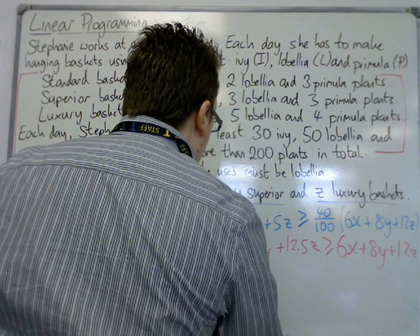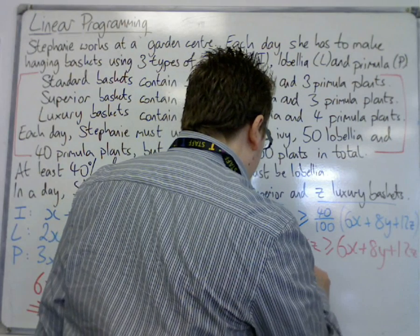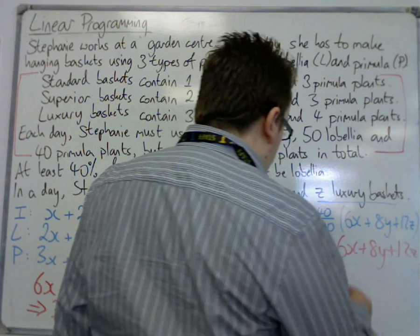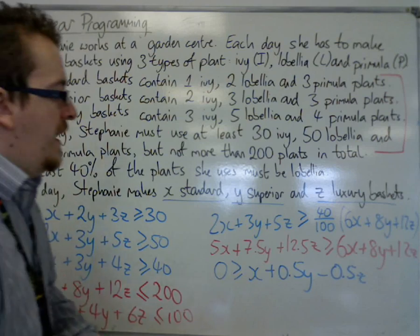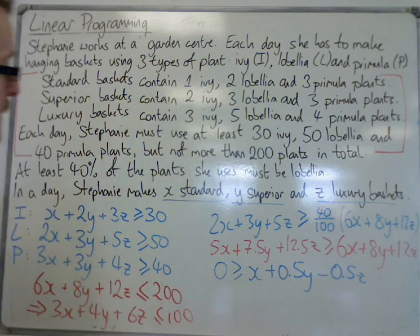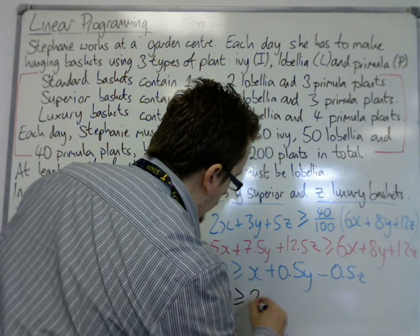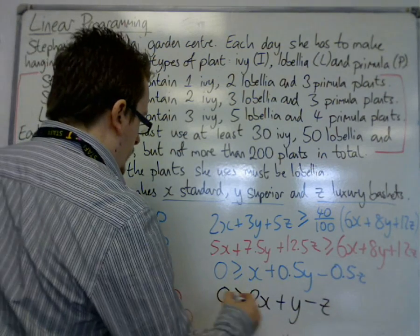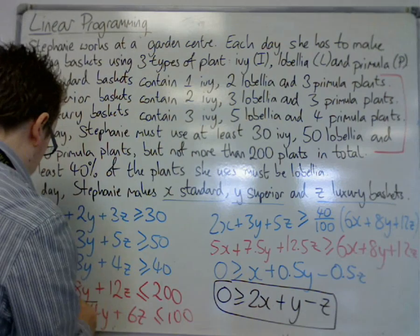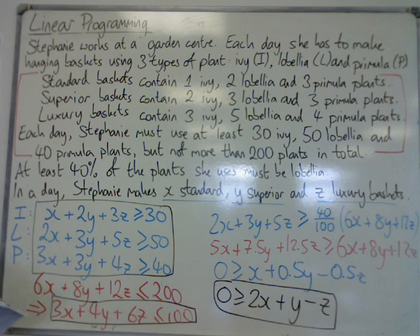We can move everything onto the right-hand side. Take 5x from both sides, giving x. Take 7.5y from both sides, giving 0.5y. And take 12.5z from both sides, giving negative 0.5z. We want to avoid decimals to keep a nice-looking inequality, so multiplying everything by 2 we get 2x plus y minus z, greater than or equal to zero. That is our final set of five inequalities.